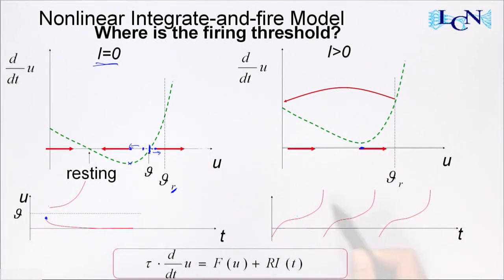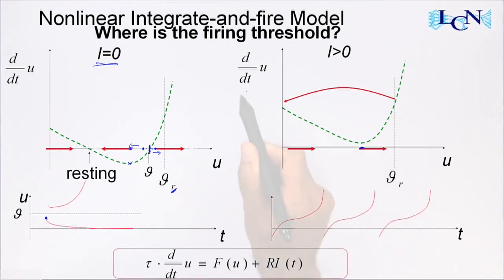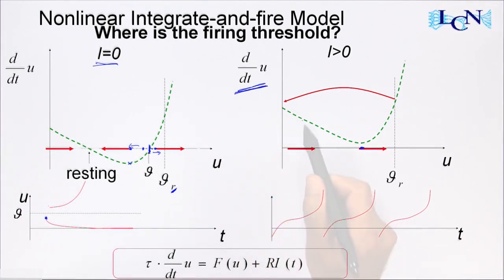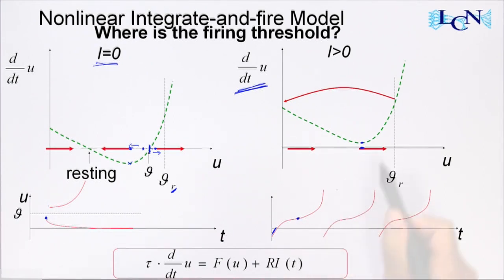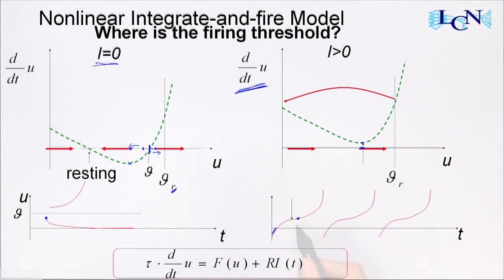Just before the fixed points disappear, they would still touch the zero line about here. This is the critical value of the voltage for which repetitive firing sets in under a constant but positive input current. In the voltage trace figure, this corresponds to the point where the slope is minimal — the derivative is at its minimum before the voltage takes up speed again. That minimal slope region corresponds to the threshold for constant input.